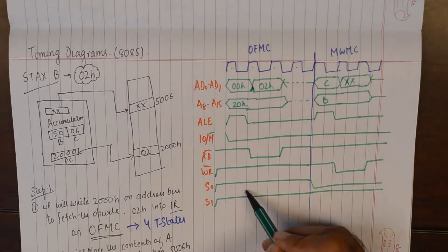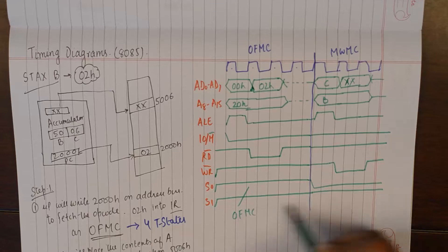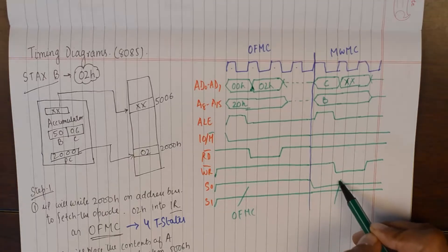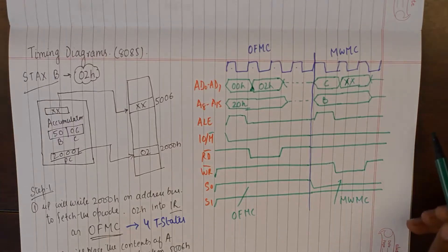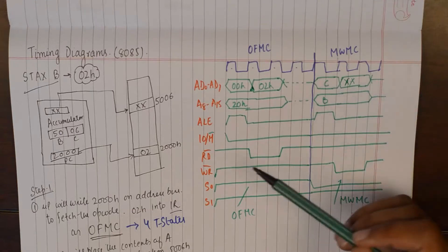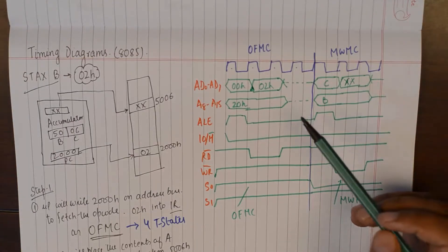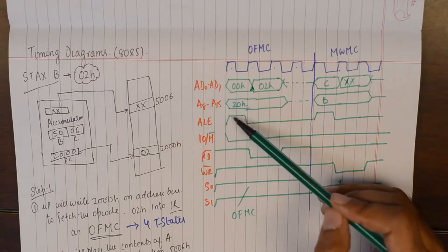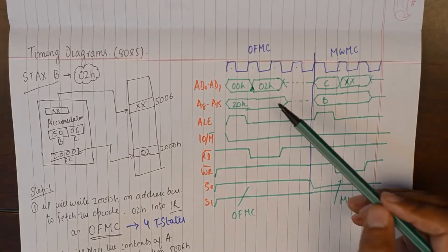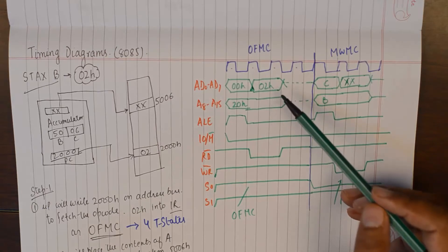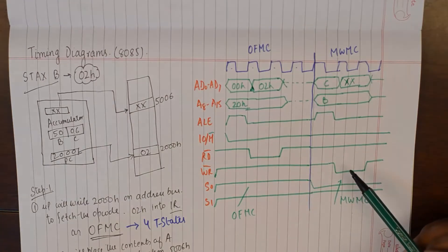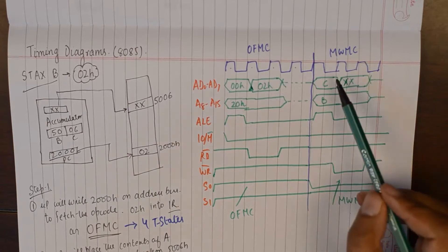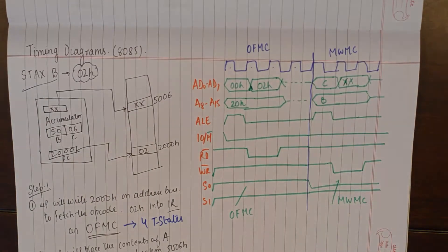And then this is opcode fetch machine cycle. This combination is for memory write machine cycle. So that is how we bring the data, we send the data, we control the address and data lines by ALEs. We place the contents into registers of microprocessor and memory by controlling read and write signals. And the whole operation is governed by the status signals S0 and S1.